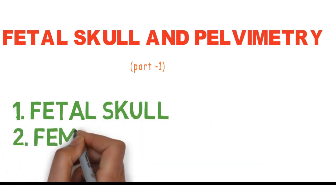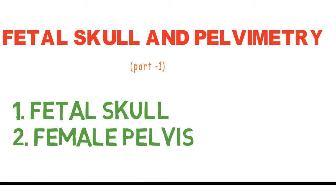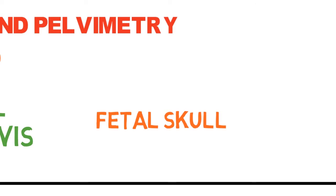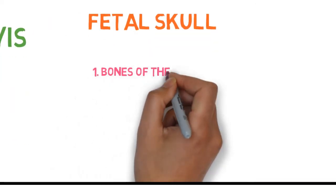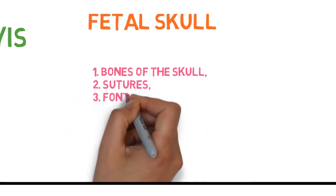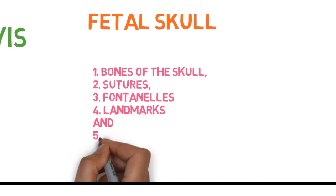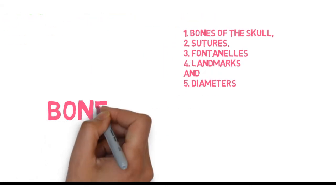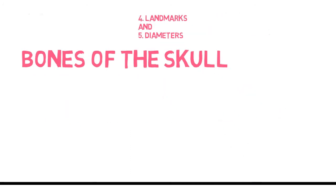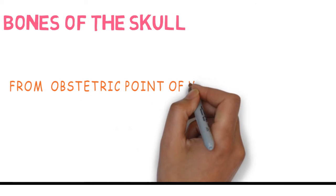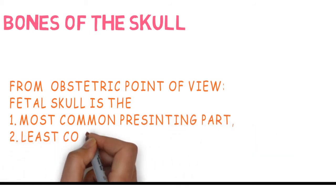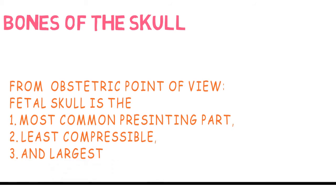While discussing the fetal skull, we are supposed to learn most importantly the diameters. We'll know about the landmarks before going on to the diameters, and we'll learn about the bones that make up the fetal skull, the sutures, and the fontanelles. The fetal skull is very important from an obstetric point of view because it is the most common presenting part, the least compressible presenting part, and the largest presenting part compared to breech and others.